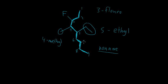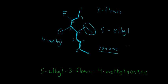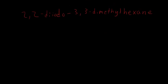Going to name this alphabetically: ethyl is going to be first, so five-ethyl. Then the next thing is fluoro, so three-fluoro. And then four-methyl nonane. So once you break it down, not too bad to name: five-ethyl, three-fluoro, four-methylnonane.